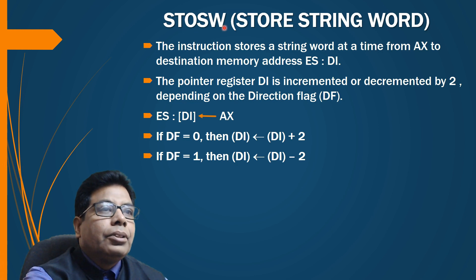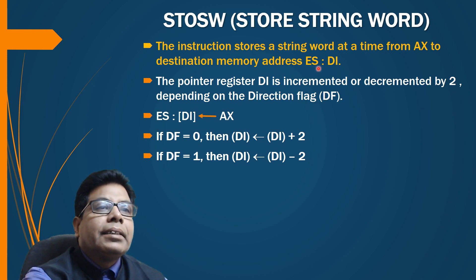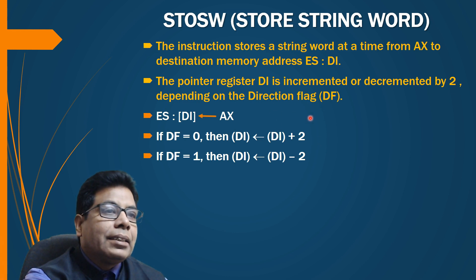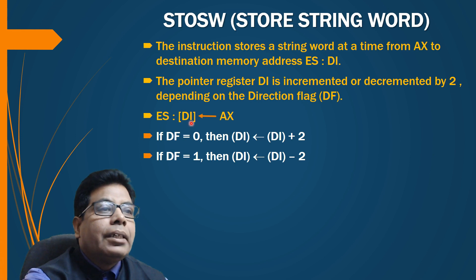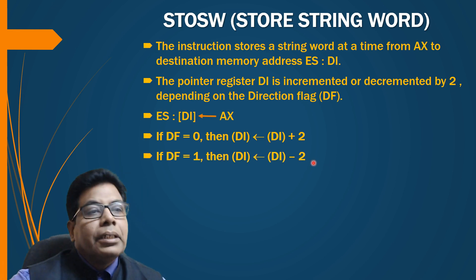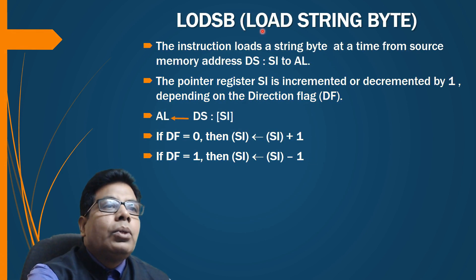STOSW — store string word — stores a string word at a time from the AX register to the destination memory address ES:DI. The pointer register DI is incremented or decremented by two because a word is 16-bit. The contents of AX are transferred to the memory location pointed to by ES:DI (physical address = ES × 10h + DI). If DF=0, DI is incremented by two; if DF=1, DI is decremented by two.